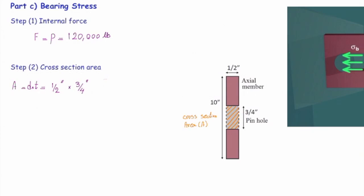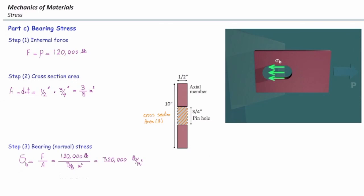Diameter is three-quarter of inch. Thickness is half inch. That gives me 3 eighths square inch. Last step is the easiest one. Divide force by area. That gives us 320,000 psi.